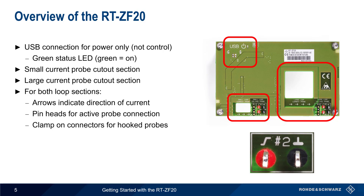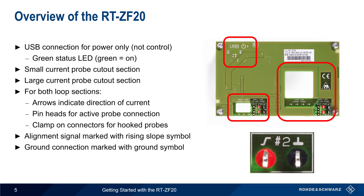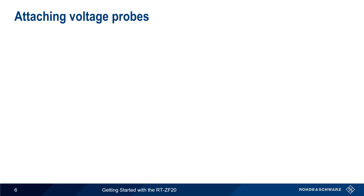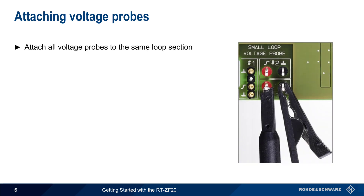Note that for both the pin and hook type connectors, the alignment signal is marked with a rising slope signal, and ground is indicated by a standard ground type symbol. When de-skewing multiple voltage probes, all probes should be attached to the same loop section. For example, if we wanted to de-skew two or more voltage probes, they should all be connected to only one section.